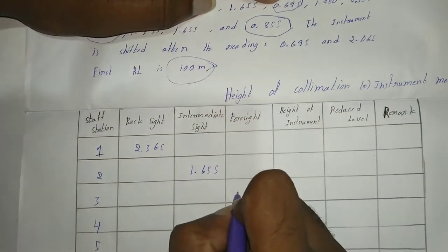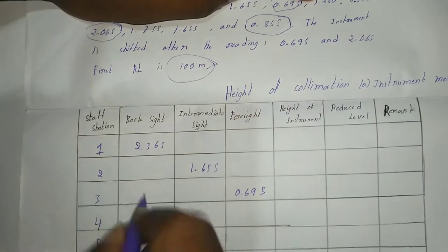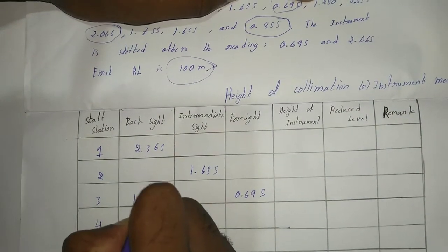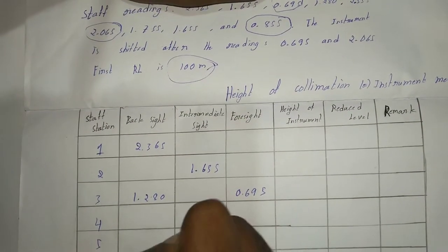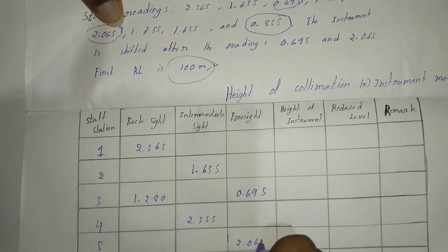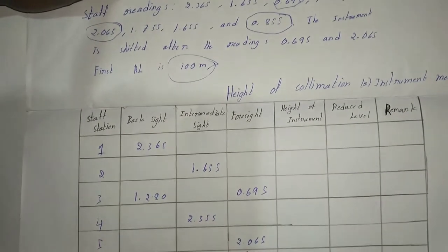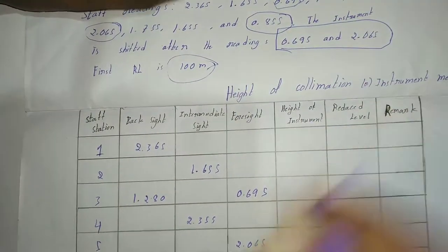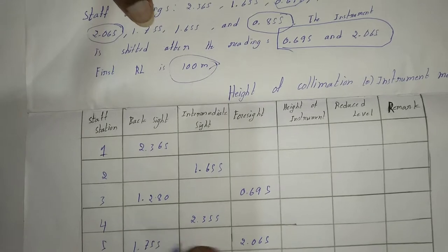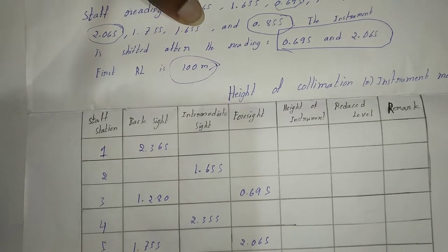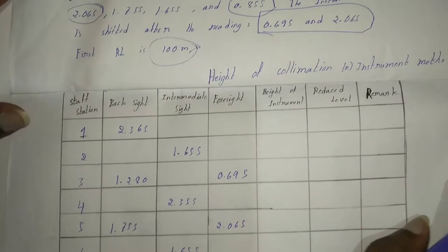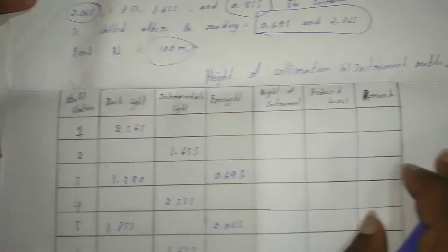So sub this validation, our first value in backsight, second value in intermediate sight, foresight. Here it is the height of instrument method.